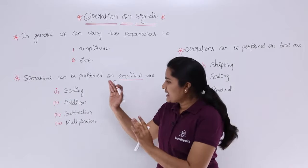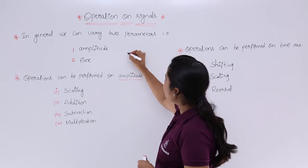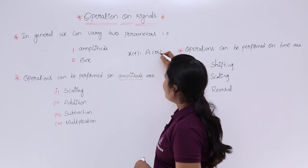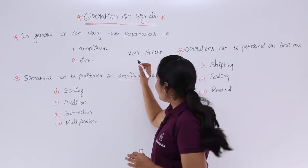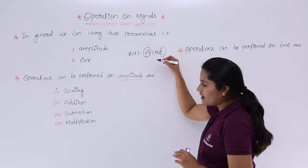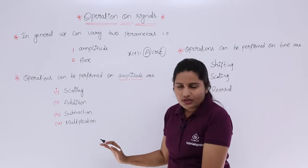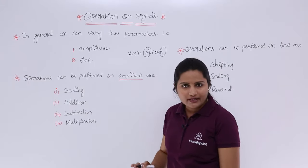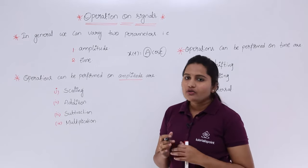Coming to amplitude scaling, for example if you have a signal x(t) = a·cos(t), when you perform operations on amplitude, only this parameter is going to change. There is no effect on time when you are doing operations on amplitude. That means if you do scaling, addition, subtraction, or multiplication, only the amplitude varies — not the time.